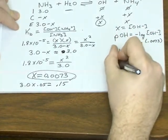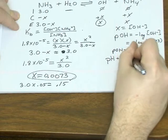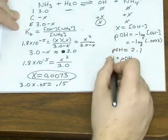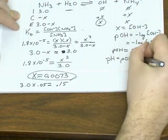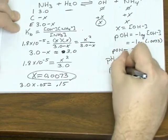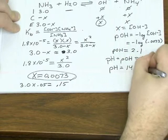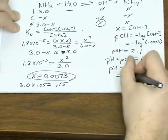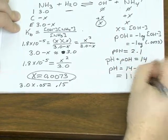And a common relationship between pH and the pOH is that for any solution, those two things are going to add up to give you 14. So the pH is going to equal 14 minus 2.1, which equals 11.9.